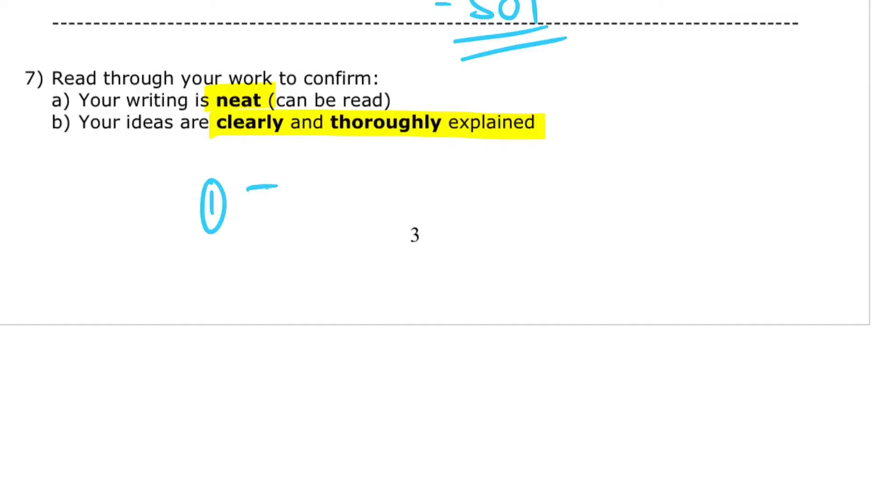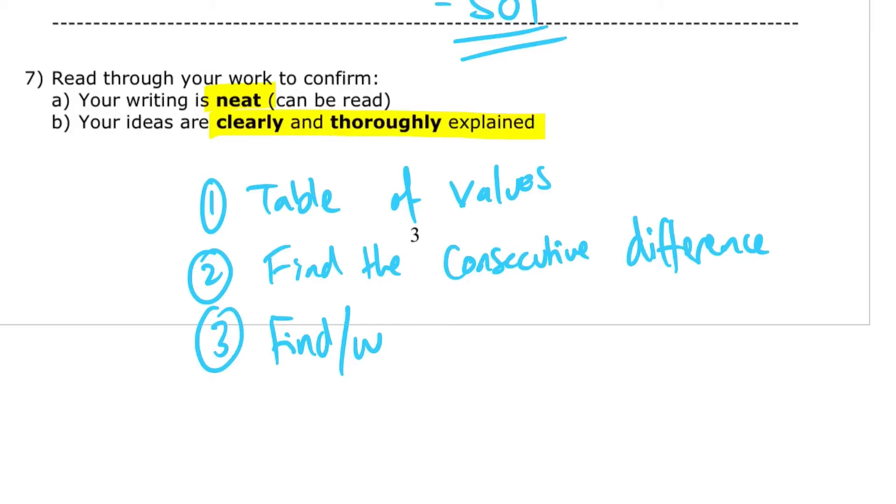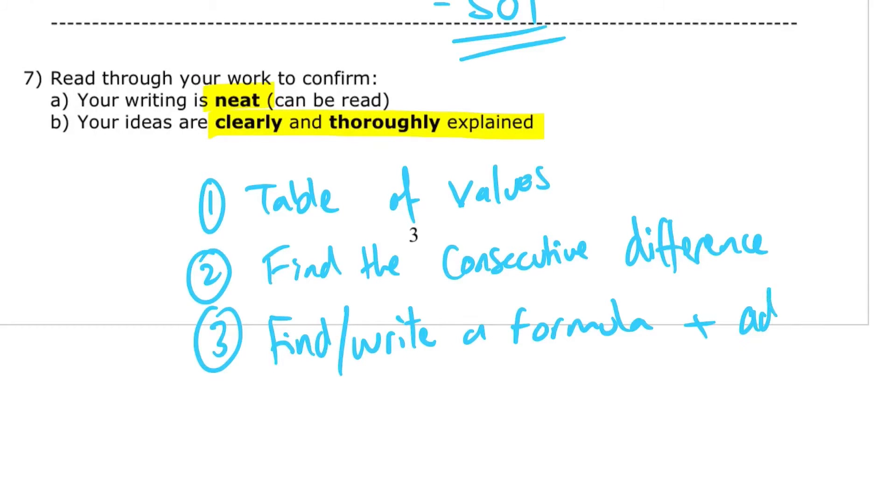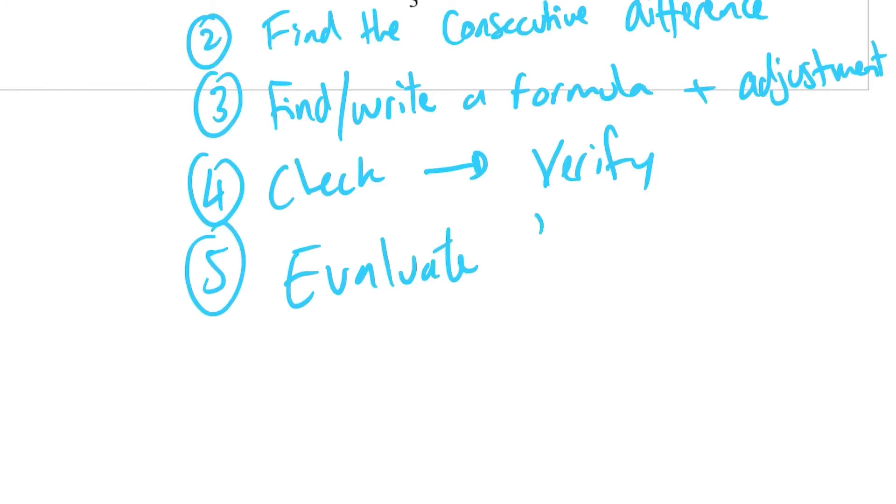So let's quickly recap then. Step 1. Complete the table of values. Step 2. Difference. And then find or write a formula plus adjustment. And then verify by doing the 6th shape or the 7th shape or the 8th shape. And then we can evaluate your formula. The 100th shape.